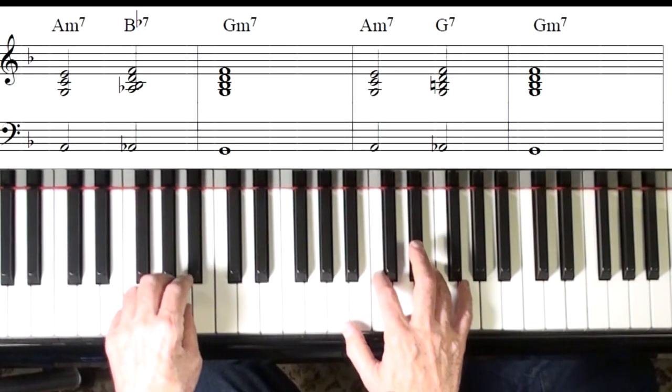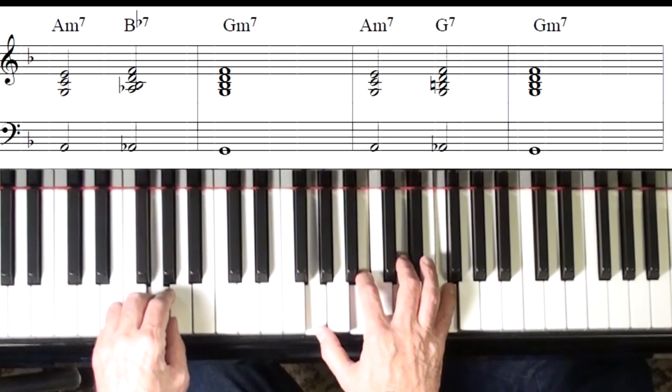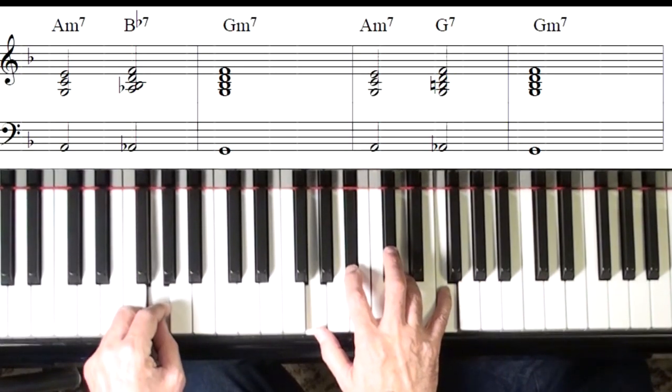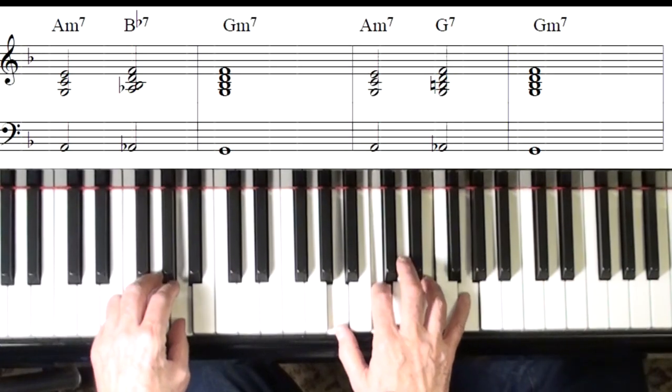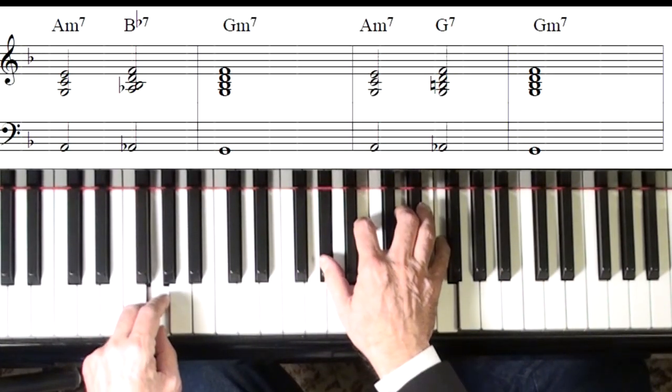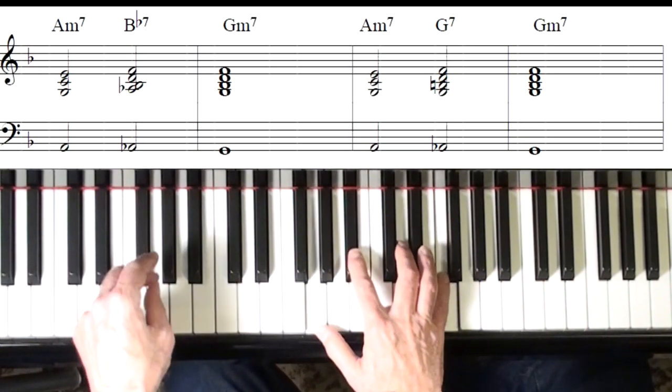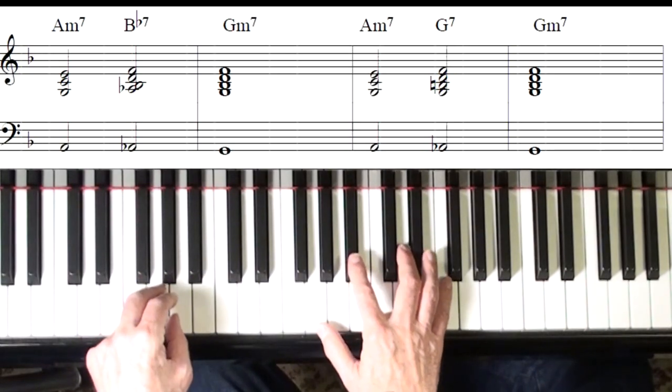So one way would be to go like that, just go to G seventh first. Maybe put the flat nine in and then just go. But the root movement has stayed the same there on G.